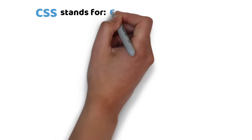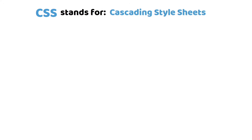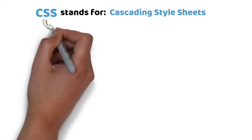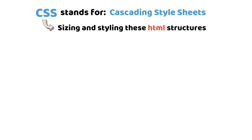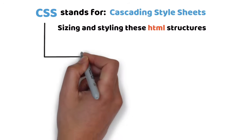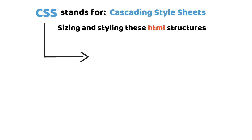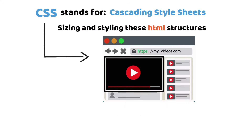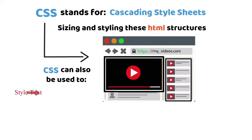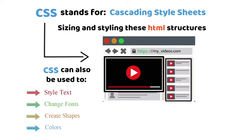CSS stands for Cascading Style Sheets, and it comes into play in sizing and styling these HTML structures. For example, CSS styled the video container so it is rectangularly displayed, bigger than the recommended videos displayed on the site. CSS can also be used to style text, change fonts, create shapes and color, etc.